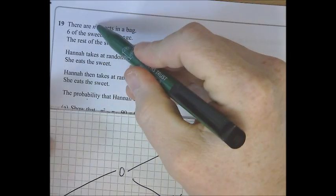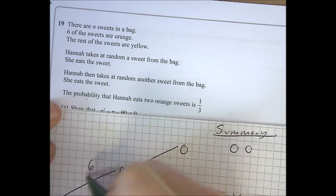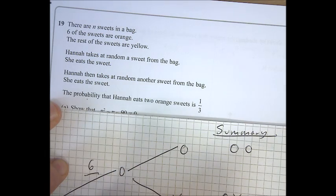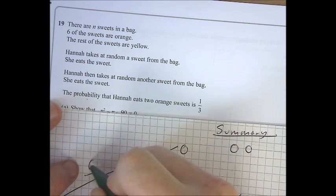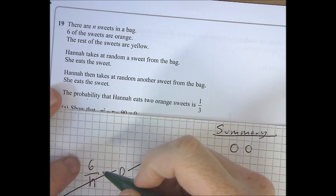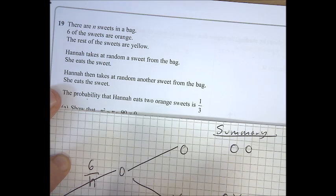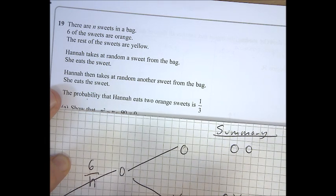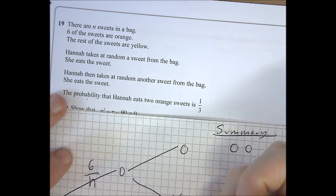So if that had been a 10, we would have gone 6 out of 10 are orange, and 4 out of 10 are yellow. But it's not 6 out of 10, it's 6 out of N, and when I said 4 just then, I got that by taking away 6 from 10. Yeah, that's how I got the 4.